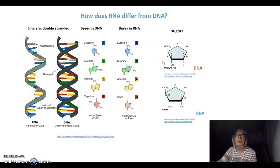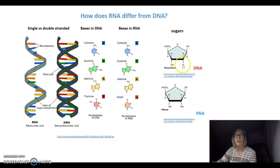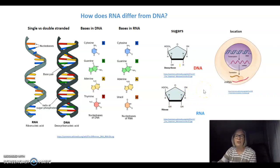We can also look at the sugars in the nucleotides. In DNA the sugar is deoxyribose — if you look at carbon number two, it has two hydrogens. In RNA the sugar is ribose, where carbon two has a hydrogen and a hydroxyl group. DNA is missing the oxygen on carbon two, so it's a deoxyribose as opposed to a ribose in RNA. Finally, the location differs: DNA is only found in the nucleus, while RNA is found in both the nucleus and the cytoplasm.